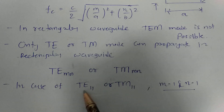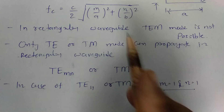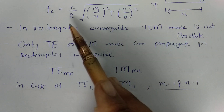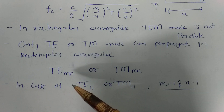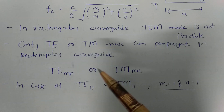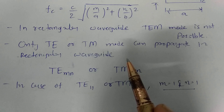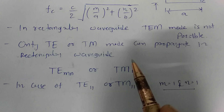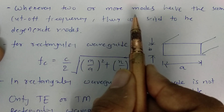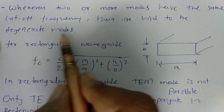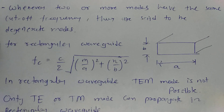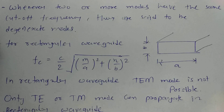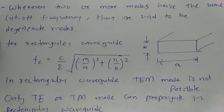Similarly, TE21 and TM21 have the same cutoff frequency when you substitute the values into the formula, so those are also degenerate modes. In short, degenerate modes are those modes where the cutoff frequency is the same. There could be more than two modes having the same cutoff frequency — all such modes are said to be degenerate modes. When two or more modes have the same cutoff frequency, these are degenerate modes, and there can be multiple such modes.